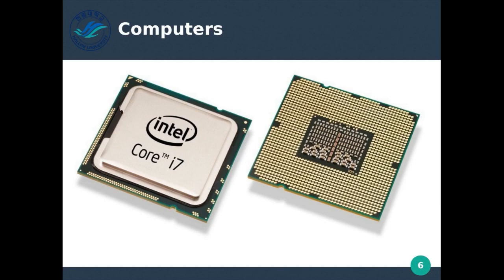The graphics card processes or interprets that output and displays it on your screen. If you move your mouse, the processor says the mouse is moving and needs to move on screen as well. So the processor basically computes and commands everything in the computer — what it should do and how it should work.